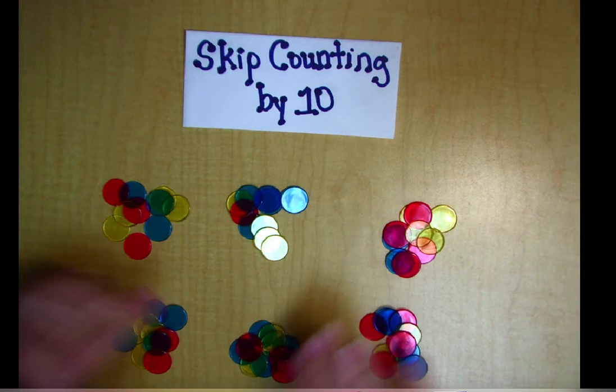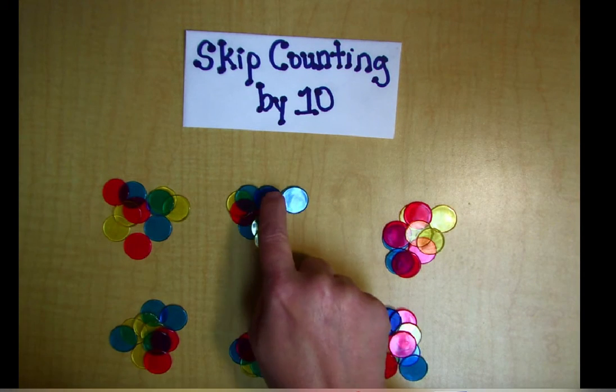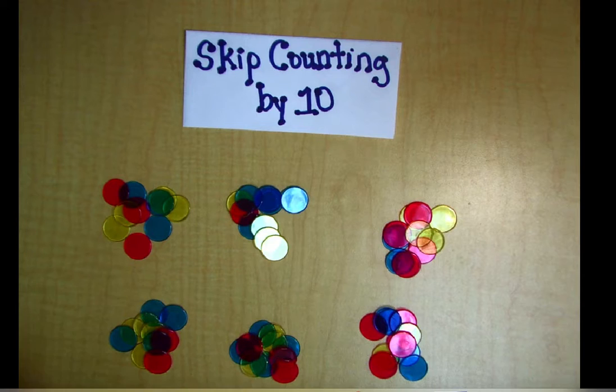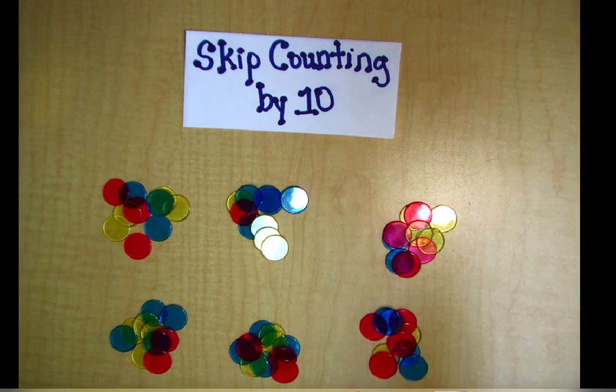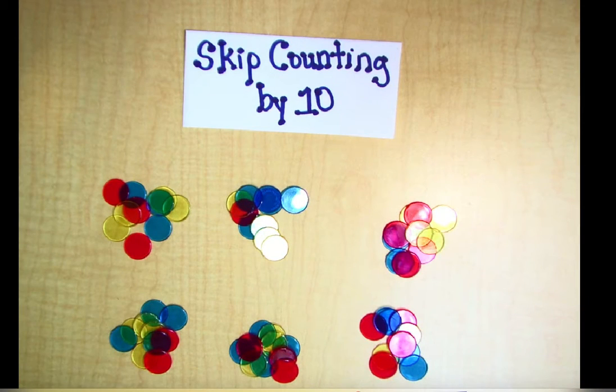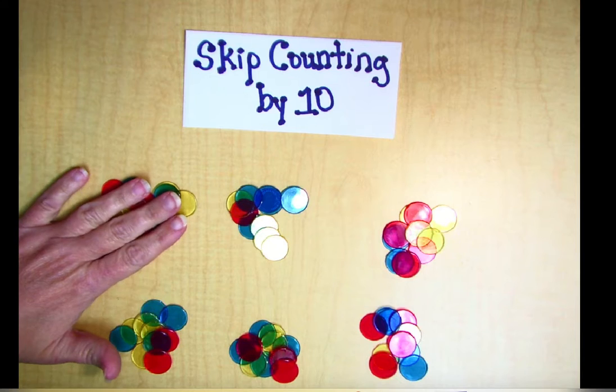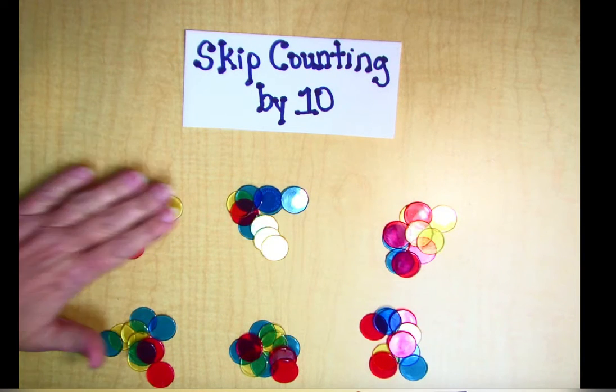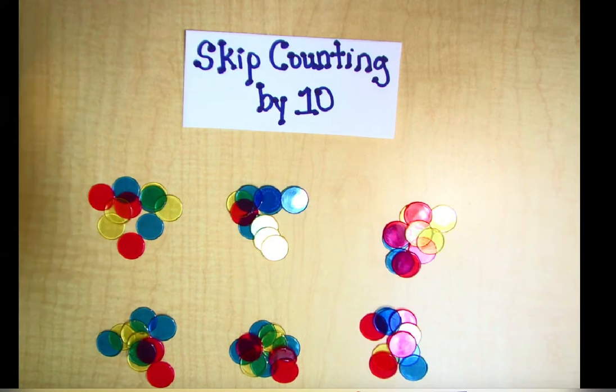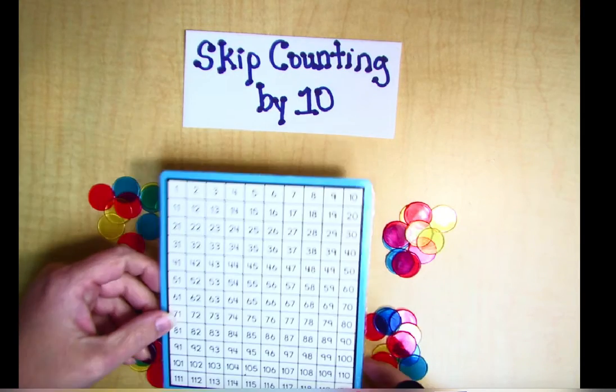Well, we could go 10 and then 11, 12, 13. We could count them one at a time but that's not very efficient and it would take quite a long time. So a more efficient way to count is skip counting in groups of 10. So I've got 10 in each of these piles and the way that we skip count is count 10 at a time.